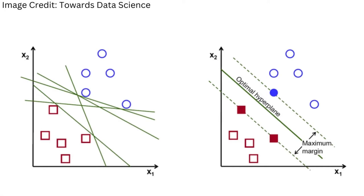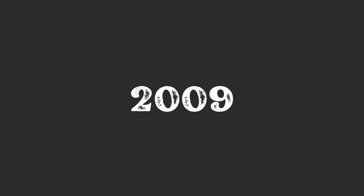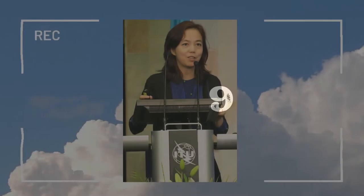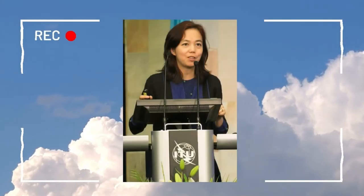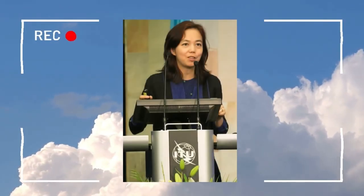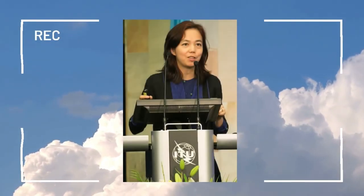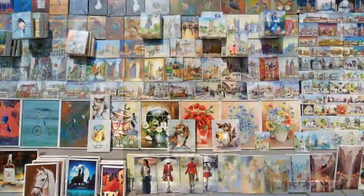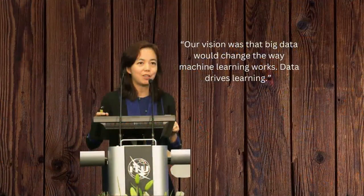2009 was the year in which Fei-Fei Li, an AI professor at Stanford, launched a free database of more than 14 million labeled images named ImageNet. She quoted that, 'Our vision was that big data would change the way machine learning works. Data drives learning.'